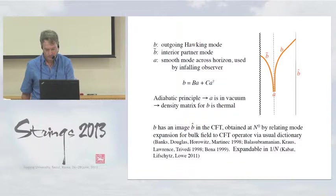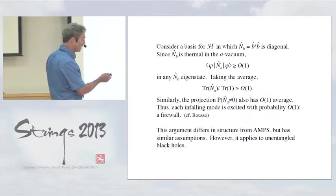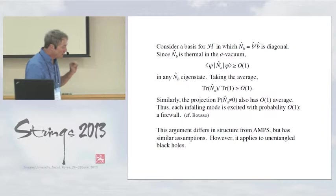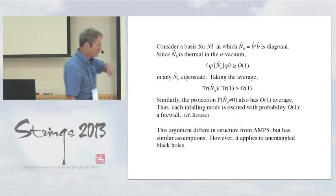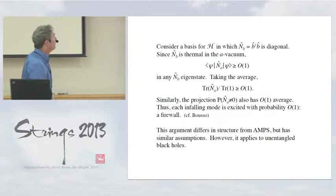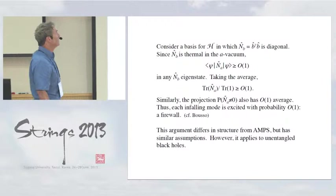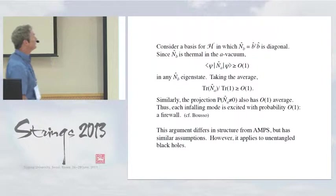But in fact, for the purposes of how I'm going to use this dictionary between B in the bulk and B hat in the conformal field theory, one doesn't need really high precision. Just order one agreement. So it's not something that's sensitive to really small effects. So now, so what's the argument then for the firewall? So let's consider now a basis for this Hilbert space of black hole states in which the number operator for this B operator is diagonal. Now, in the vacuum for the infalling observer, the B is thermal. It's not in an eigenstate. It's in some, it populates a range of values with a thermal probability.